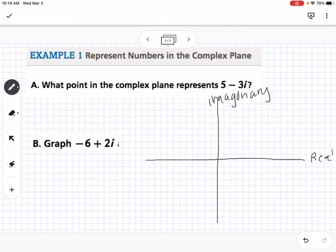So if I want to graph the point 5 minus 3i, I would go 1, 2, 3, 4, 5 on the real axis, and negative 1, 2, 3 on the imaginary axis. So that point right there would represent 5 minus 3i.